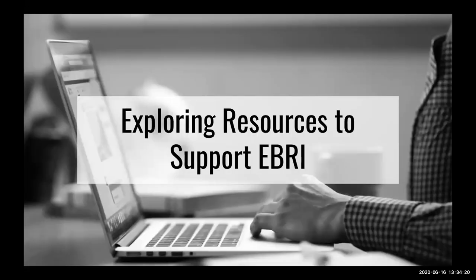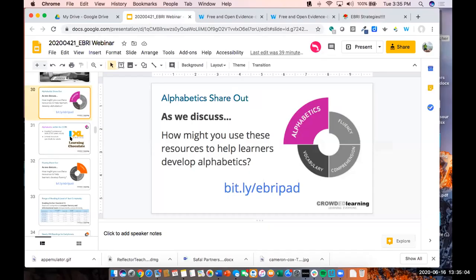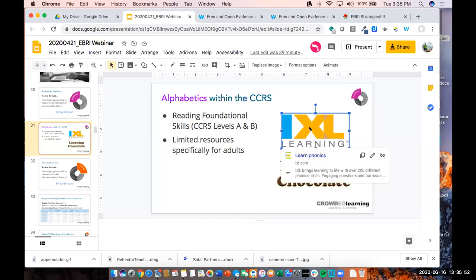Now we're going to dive into free and open resources that align to each of these components. Within the college and career readiness standards, levels A and B of the reading standards are the only ones that address alphabetics. Once you get beyond level B — aligned to second/third grade level — the CCRS reading standards do not include alphabetics. IXL is a tool that isn't completely free, but you can do one lesson a day. It's not just an alphabetics tool — it has multiple subject areas including math, science, social studies, and Spanish.